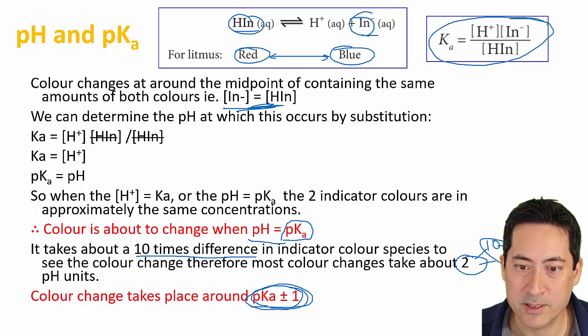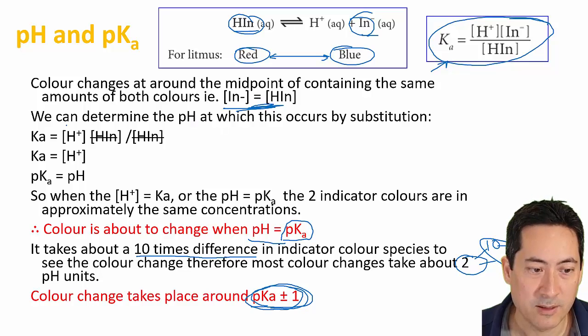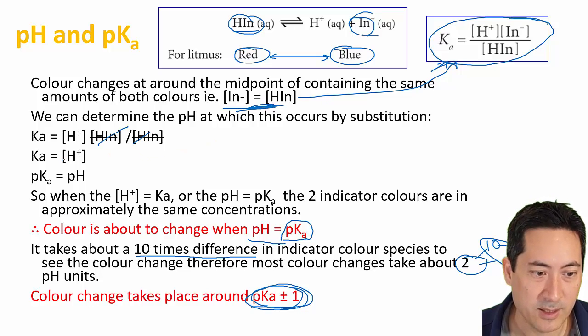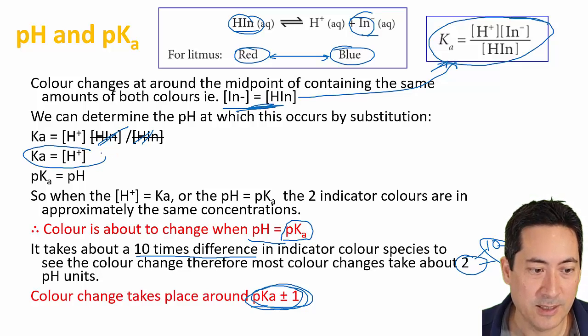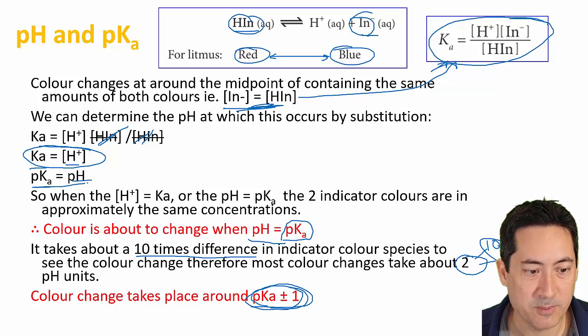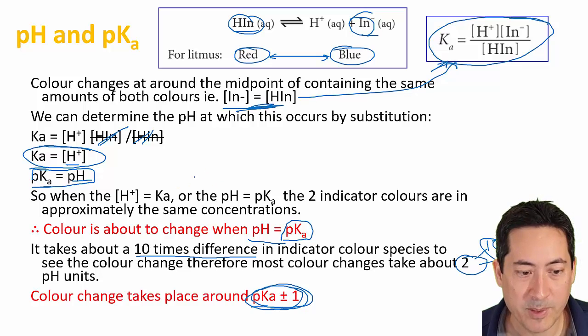When we substitute that into the acid dissociation constant equilibrium constant for acids, we can cancel these out. That shows us that when we have half and half, the Ka and the hydrogen ion concentration are equal. If we take the negative log of both of those, we get the pH and the pKa. That tells us that when the pH equals the pKa, we have about half blue, half red.